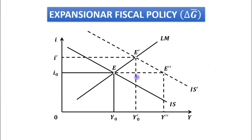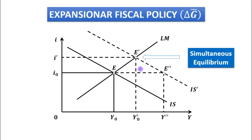This means equilibrium in both the goods market and the money market. But one thing to observe is that when the interest rate increases, the output level decreases from y double-dash to y dash 0.